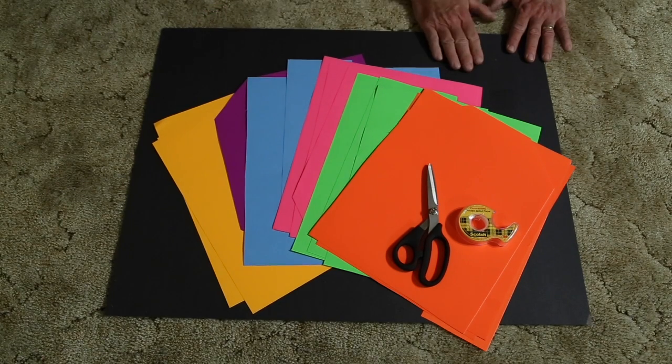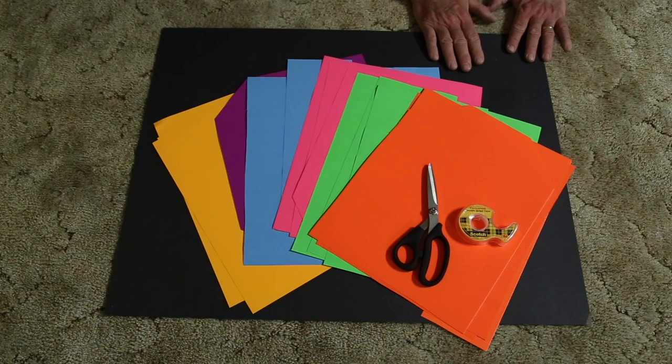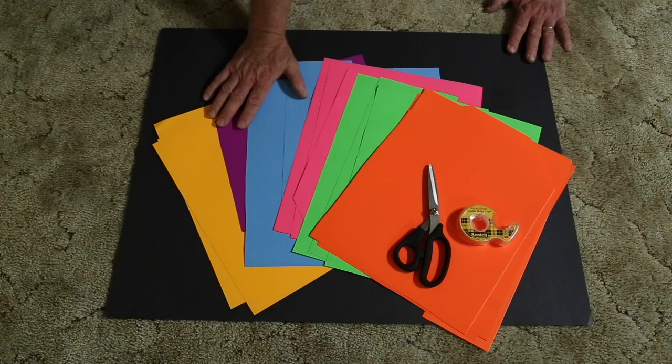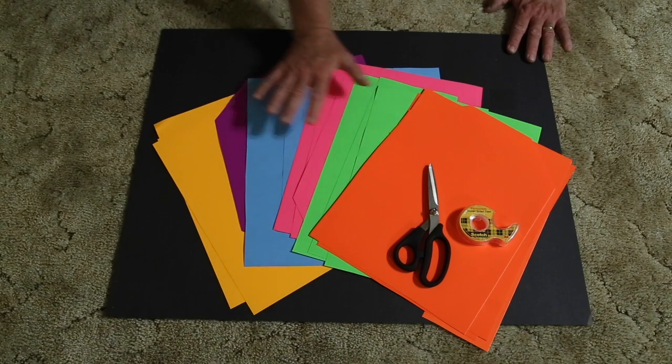What you'll need is some sheets of black poster board and several different colors of the dayglow type of poster board. This is the stuff that's really bright.